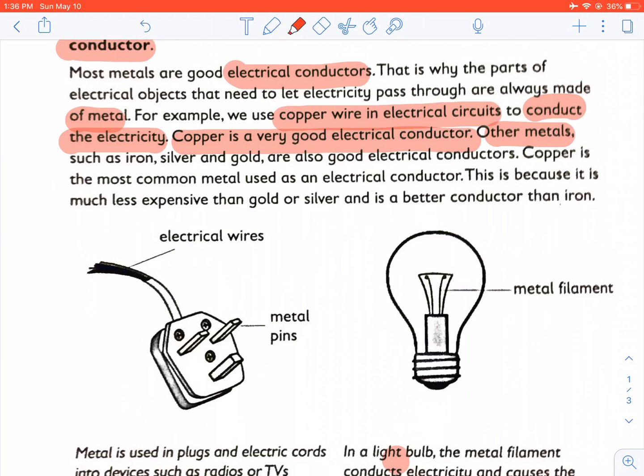Other metals such as iron, silver and gold are also good electrical conductors. Copper is the most common metal used as an electrical conductor. This is because it is much less expensive than gold or silver and is a better conductor than iron.